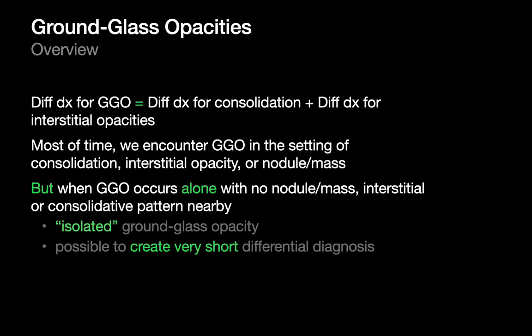It's probably not surprising then that the technical differential diagnosis for ground glass opacity is the sum of the differential diagnoses for both consolidation and interstitial opacity, which is a very long list. Most of the time when we see ground glass opacity on a chest CT it's in the setting of consolidation, interstitial opacity, or a nodule or mass in that same area. But occasionally we encounter ground glass opacity by itself — what we refer to as isolated ground glass opacity — and in this setting it's actually possible to create a very short differential diagnosis.